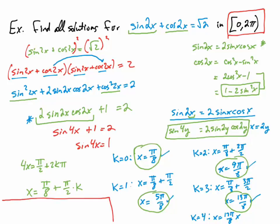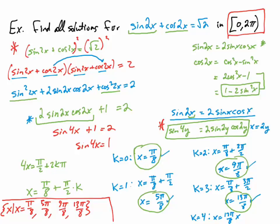So the solution set is all x such that x equals pi over 8, 5 pi over 8, 9 pi over 8, and 13 pi over 8. This example is quite challenging — seeing that you need to square both sides at the beginning, and applying the double angle substitution, are both non-obvious steps. This type of question is as tough as we're going to see.